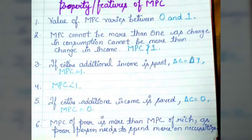Now let's look at some features of MPC. The first point states that the value of MPC varies between 0 and 1. MPC cannot be more than 1, as the change in consumption cannot be more than the change in income.